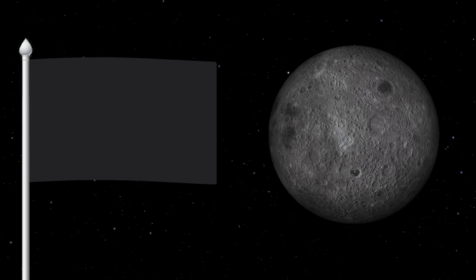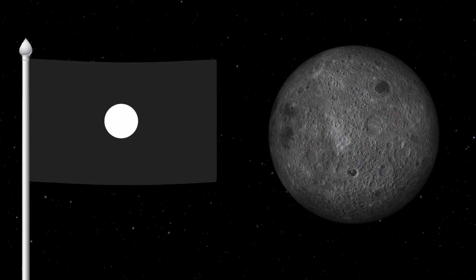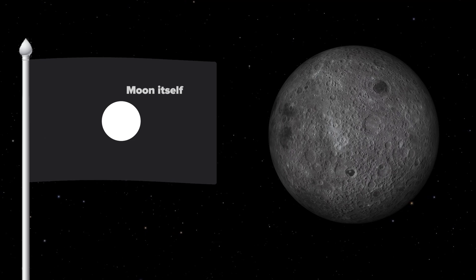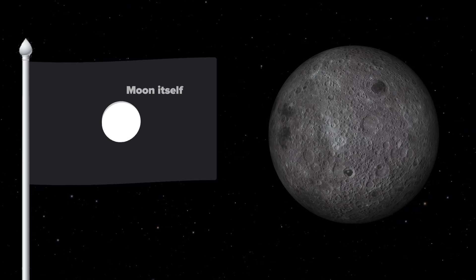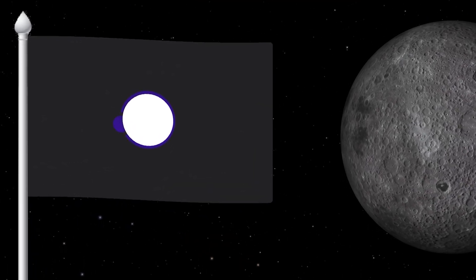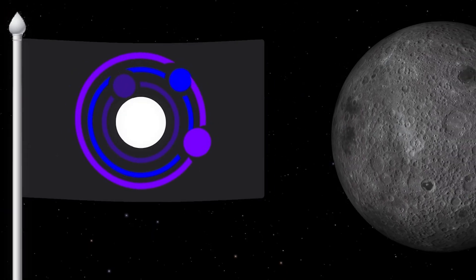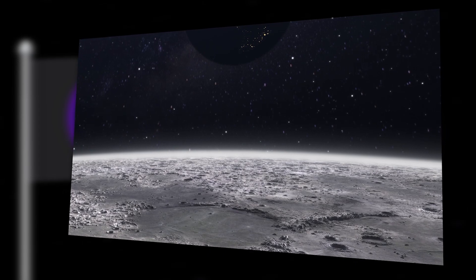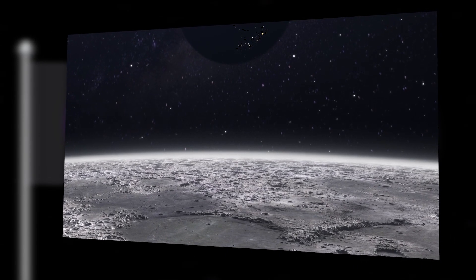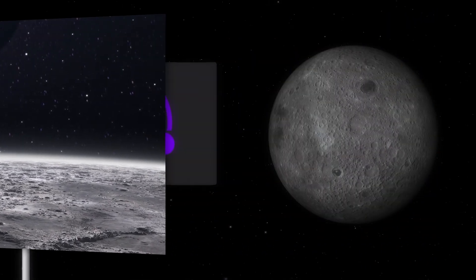Let's start making a flag for our Moon. In the center of the flag will be a white circle symbolizing the Moon itself. And around the Moon will be three orbits of different colors: deep indigo, electric blue, and purple, all of which symbolize the Moon's journey through space and its eternal dance with gravity. The flag turned out amazingly beautiful.